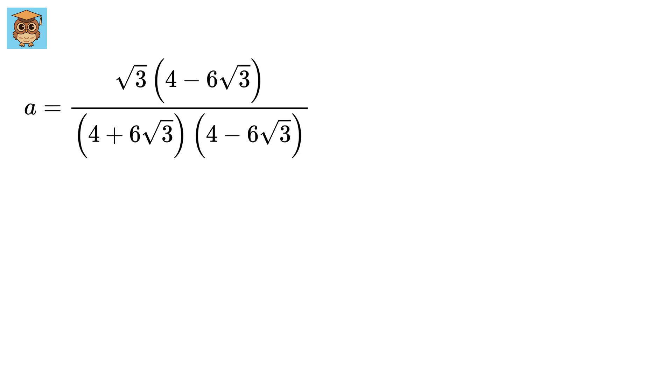Then multiply and divide by 4 minus 6 root 3. Denominator becomes 4 square minus 6 root 3 square, and the numerator becomes 4 root 3 minus 6 times 3. Denominator will be 16 minus 36 times 3 or 16 minus 108, or minus 92.